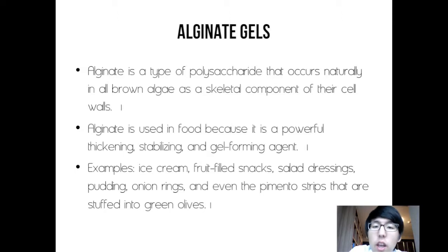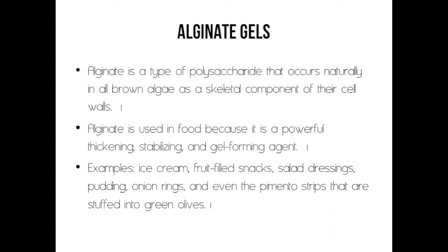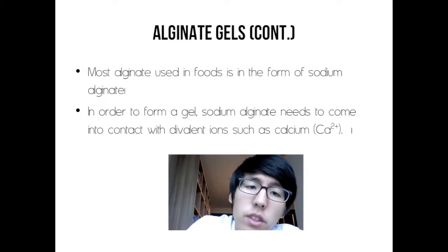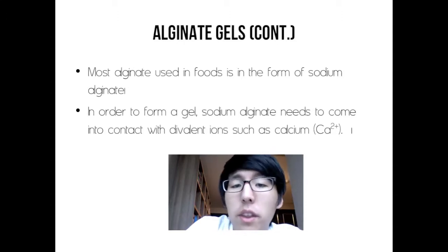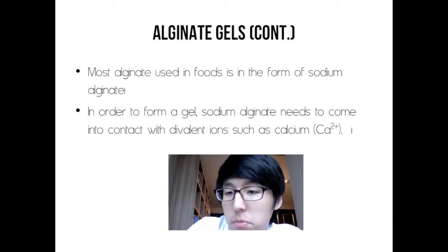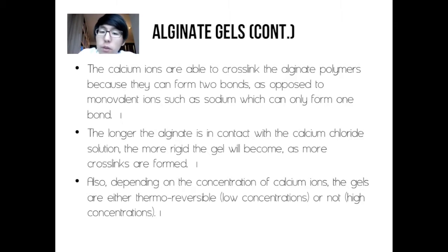Alginate gels. Alginate is a type of polysaccharide that occurs naturally in brown algae as a skeletal component of their cell walls. Alginate is used in food because of its powerful thickening, stabilizing, and gel-forming properties. Examples include ice cream, snacks, salad dressings, pudding, and onion rings. Most alginate used in foods is in the form of sodium alginate. In order to form a gel, sodium alginate needs to come in contact with divalent ions such as calcium. The calcium ions are able to crosslink the alginate polymers because they can form two bonds, as opposed to monovalent ions such as sodium which can only form one bond.